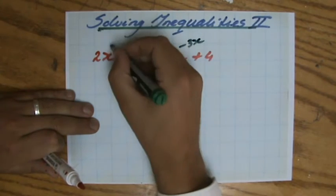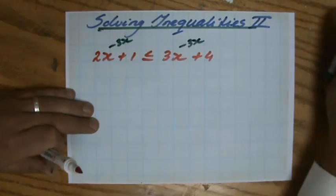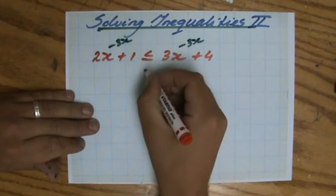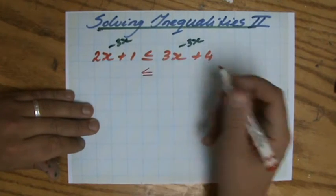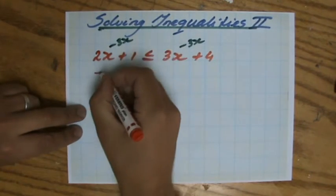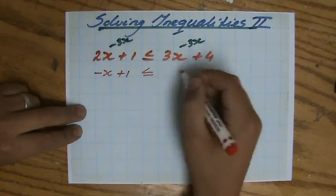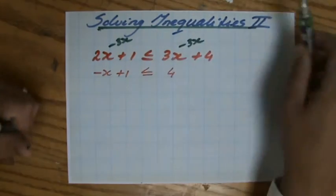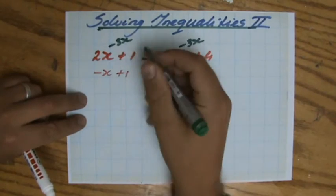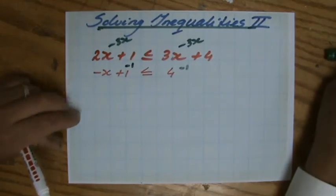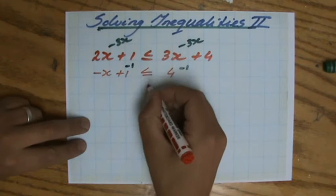They're going to take away the 3x here, and they're going to take away the 3x there. 2x minus 3x is minus x plus 1 will be 4. So make sure also you know how to solve an equation, because I'm not explaining every single step anymore. Because I assume you know how to do it.